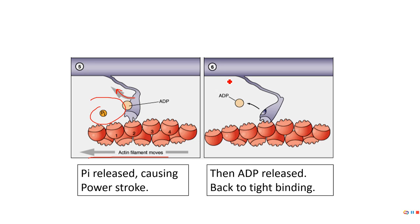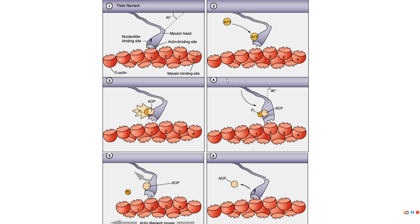ADP then leaves, and now actin and myosin are back to tight binding. This continues on and on as long as there's available calcium for actin and myosin to bind, and available ATP for them to separate and go through the whole process — muscle contraction and cross-bridge cycling will occur.